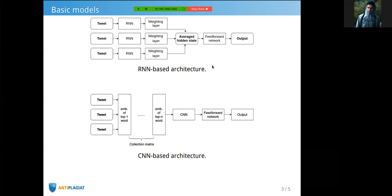The second architecture is based on CNN. It consists of the following components: CNN, which takes as input an embedding matrix of top n words in all tweets, and a feed-forward network.